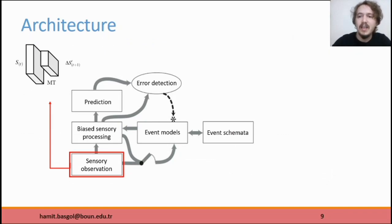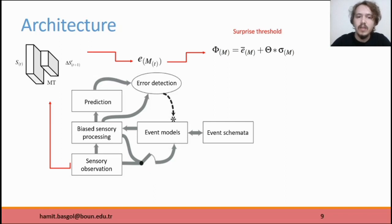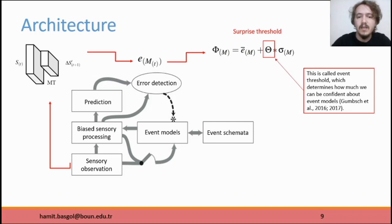The current event models receive sensory observation and predict sensory change. Predicted sensory change must generate a prediction error. The error is monitored by the system and accumulated. A threshold rate named surprise threshold is calculated for each event model. This rate is calculated by the rolling mean of errors and the rolling mean of the standard deviation of error. This formula has a parameter named theta that determines how much we can be confident about our event models. If the current error exceeds this threshold rate, this means that unexpected sensory observation occurs for the current event model.